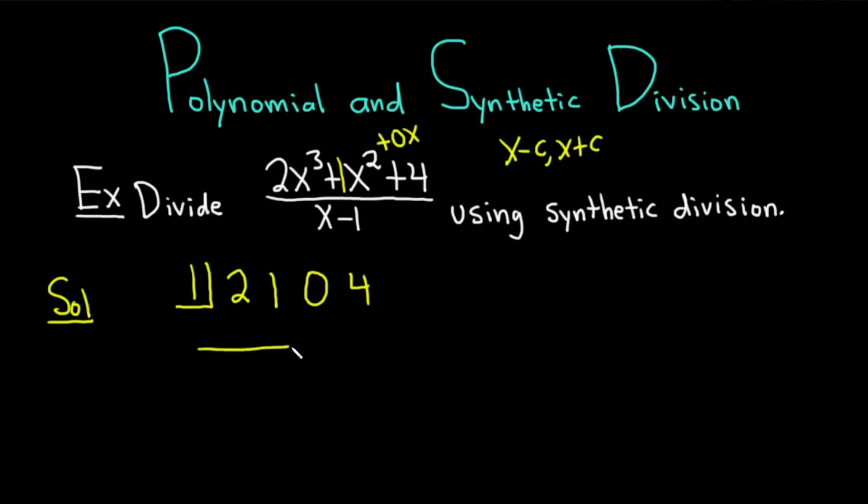And then you draw a line like this. So recap. All you do is you switch the sign here on the bottom. Then you write down the coefficients: 2, 1, 0, and then 4. Don't forget the 0s. You have to have all powers of x.